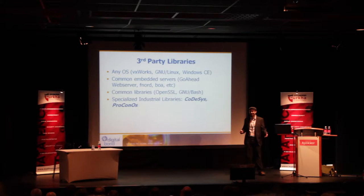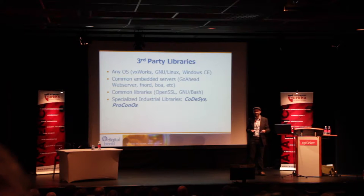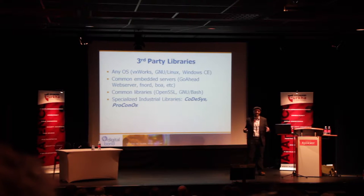Third-party libraries in the embedded world are a lot of things in the firmware: any embedded operating system — VxWorks is a very common one, Linux runs on a lot of embedded systems, even Windows CE. Embedded web servers in devices are also common third-party libraries, and then we have libraries like OpenSSL, and of course external utilities like bash that have had a lot of vulnerabilities in the last two years. But there are also some specialized industrial libraries, and that's really what I'm talking about today. Two that I've been looking at for the last two or three years are CODESYS and PROCONOS — two libraries made by different companies in Germany that have a lot of market penetration here in Europe.